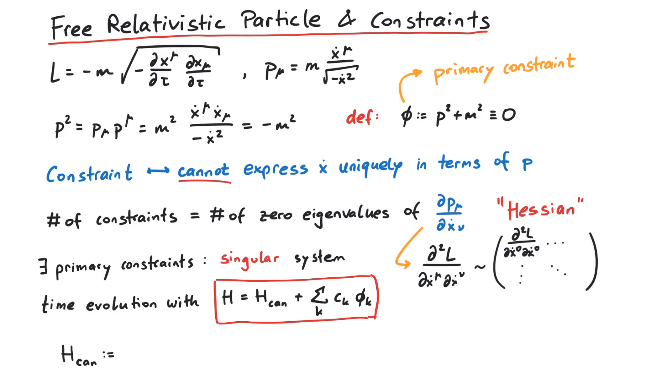The canonical Hamiltonian is defined like this, and for our system it vanishes, independent of the exact configuration.